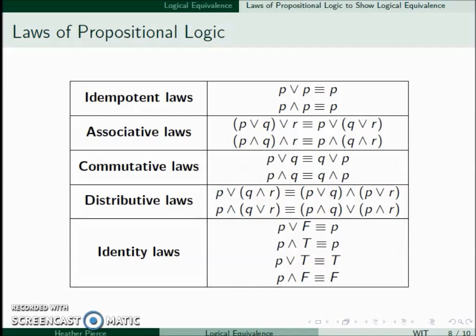We have the distributive laws. P ∨ (Q ∧ R) is the same thing as (P ∨ Q) ∧ (P ∨ R). On the other side, P ∧ (Q ∨ R) is equivalent to (P ∧ Q) ∨ (P ∧ R).